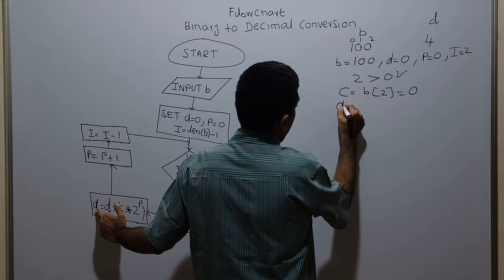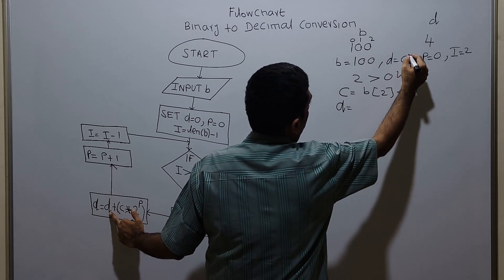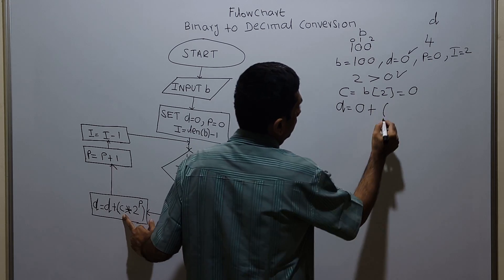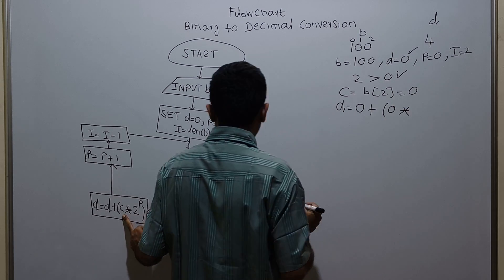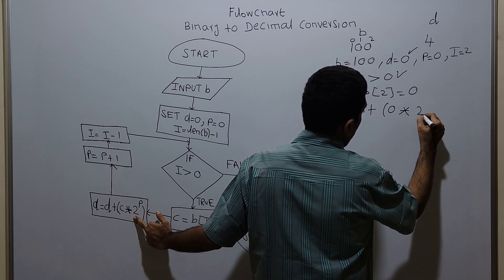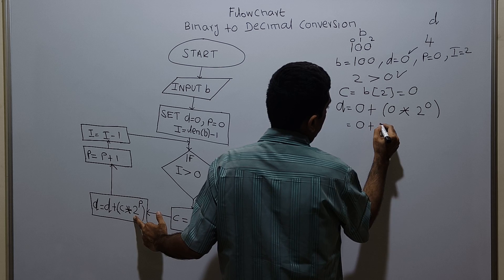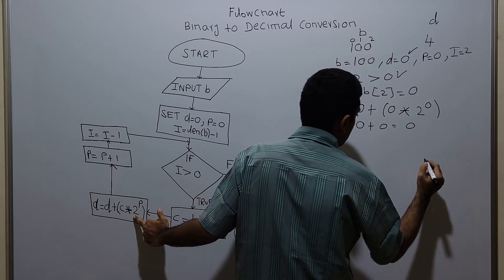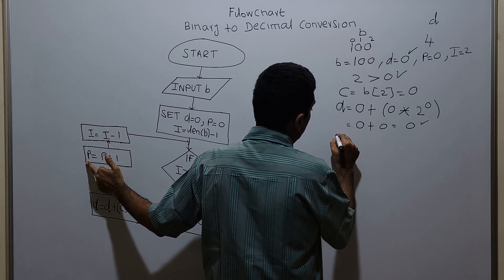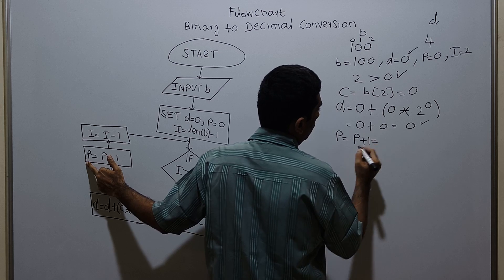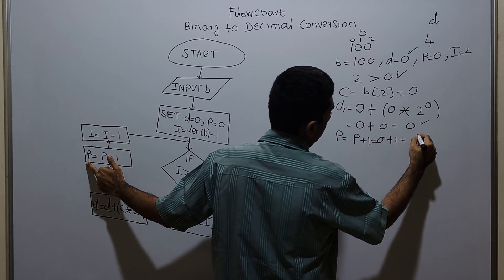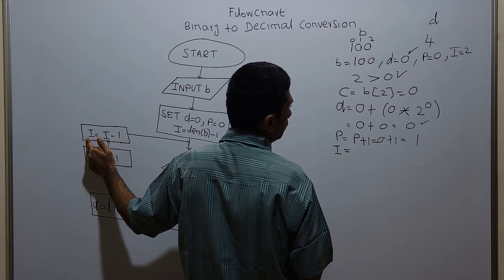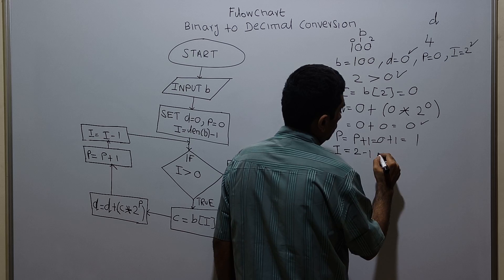D equals existing value of D, which is 0, plus C multiplied with 2 power P. C is 0 and P is 0, so this is 0 plus 0 times 2 power 0. 2 power 0 is 1, so 0 times 1 equals 0, and 0 plus 0 equals 0 — D value is 0. Then P equal to P plus 1: existing value of P is 0 plus 1 equals 1. Then I equal to I minus 1: existing value of I is 2, 2 minus 1 equals 1.